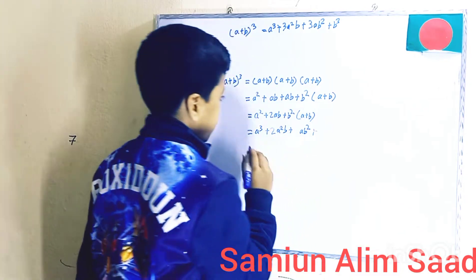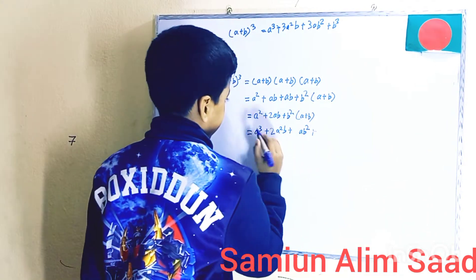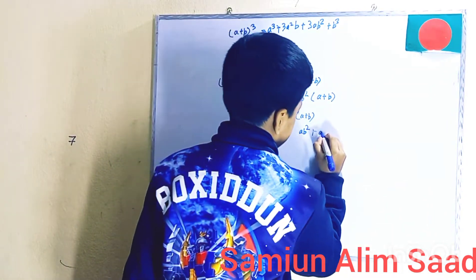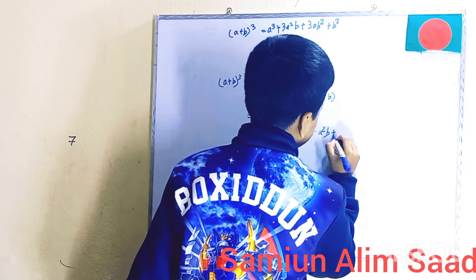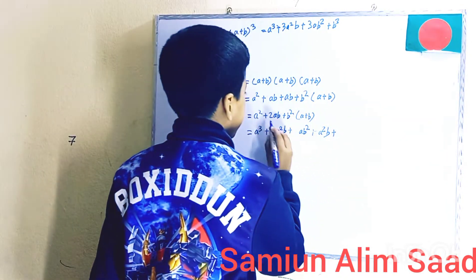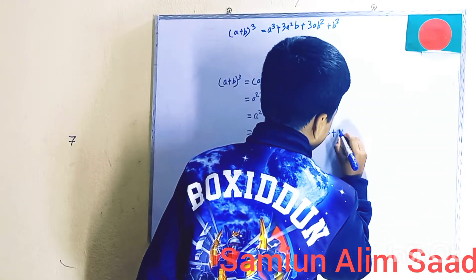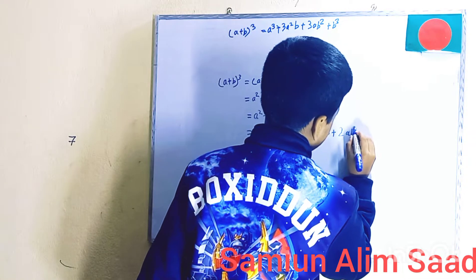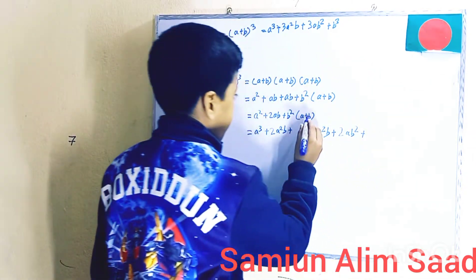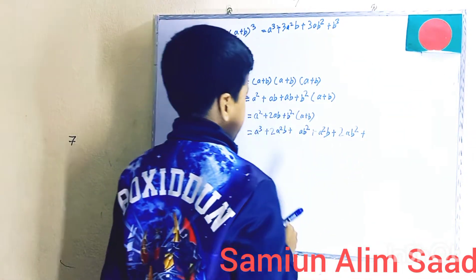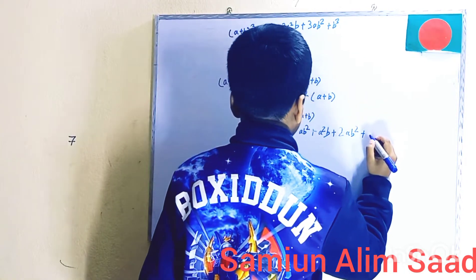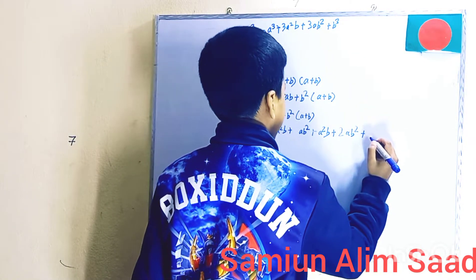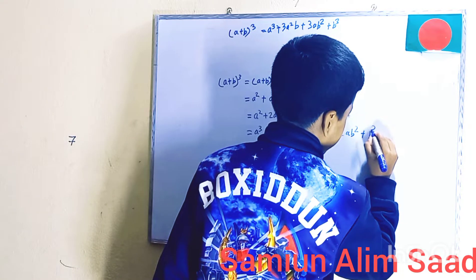Now we need to multiply with B. B times A square is A square B. B times 2AB is 2AB square. And B times B square is positive B cube.